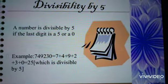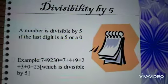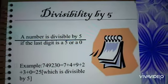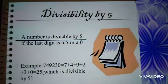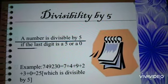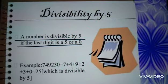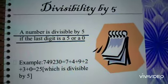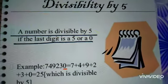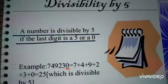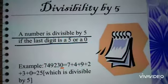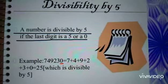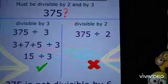Now, divisibility test by 5: a number is divisible by 5 if the last digit is 5 or 0. That means, if the ones place of any number is 0 or 5, then the whole number is divisible by 5.